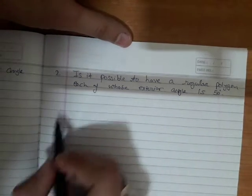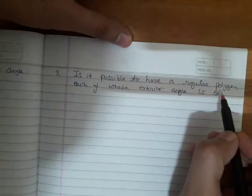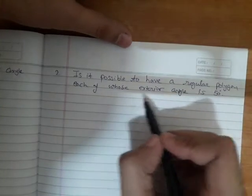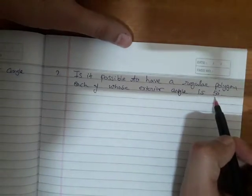Question number two: Is it possible to have a regular polygon each of whose exterior angle is 50 degrees?